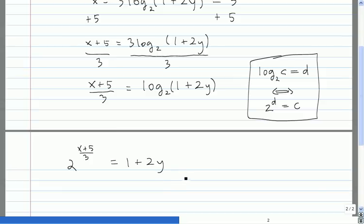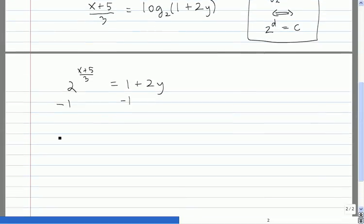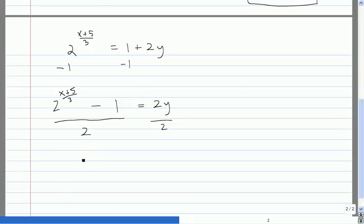The next thing we need to do is just isolate it. So we subtract 1 from both sides. So we get 2 to the x plus 5 over 3 minus 1 equals 2y. And now we just divide both sides by 2. So the equation of the inverse is 2 to the x plus 5 over 3 minus 1 divided by 2 equals y.